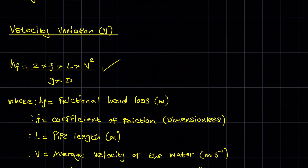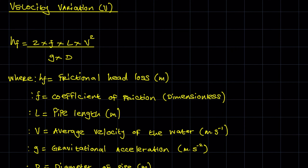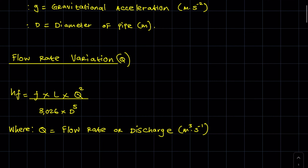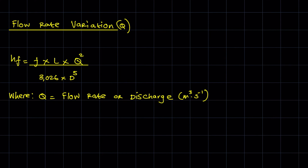If you've been given the discharge or flow rate of the water, it's much easier to use the flow rate variation, which is: hf = fLQ² / (3.026 × d^2.5). The only new term here is Q, which is the flow rate or discharge in cubic meters per second.